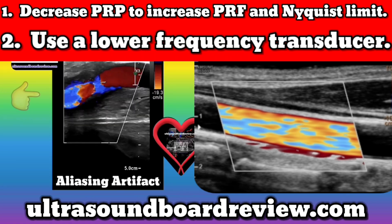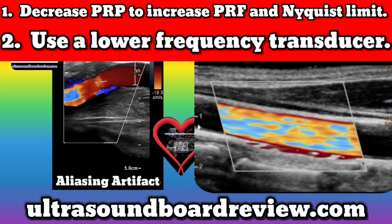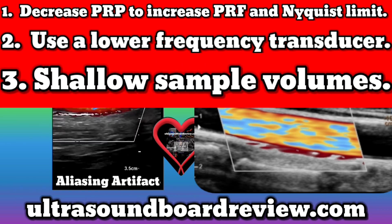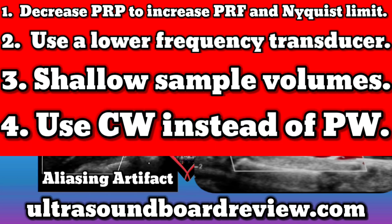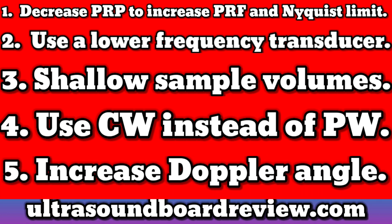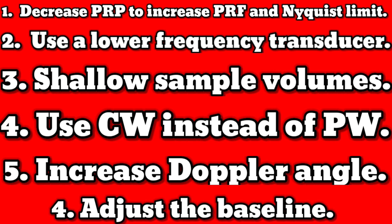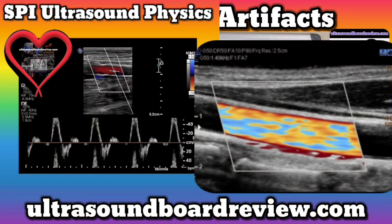Apply a low frequency transducer to create a small Doppler shift for blood flow velocity. You can also try choosing a shallower sample volume, changing from pulsed wave to continuous wave Doppler, increasing your Doppler angle which then decreases the Doppler shift for a given flow, or adjust your baseline shift. Lower shifts are less likely to exceed the Nyquist limit, and therefore less likely to alias.